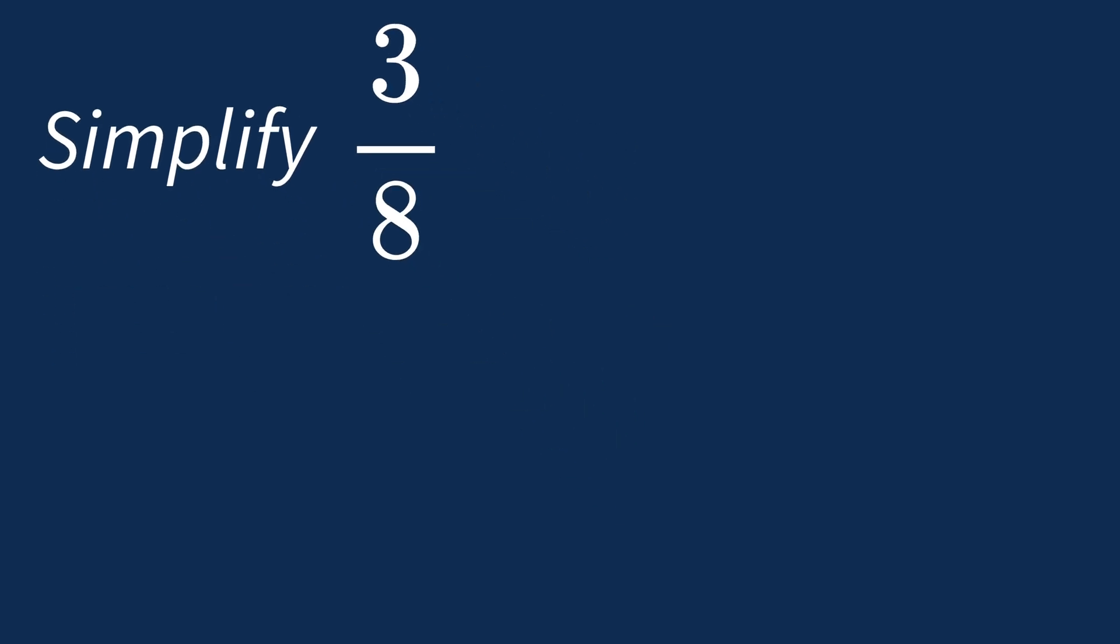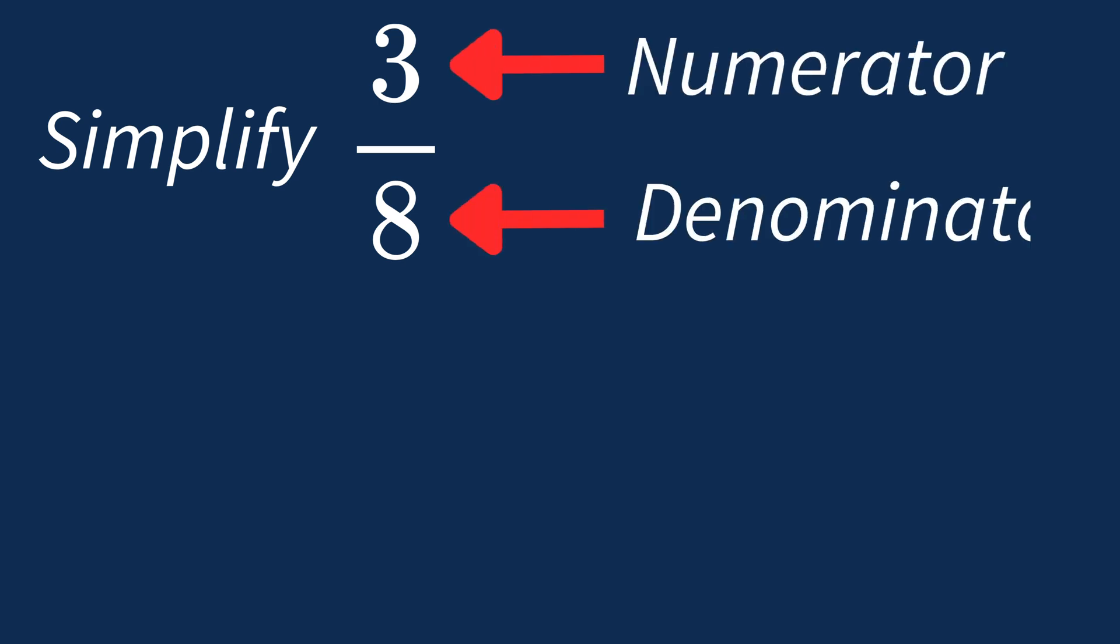When simplifying a fraction like 3 over 8, the first step is to check if there's a common factor between the top number, the numerator, and the bottom number, the denominator.